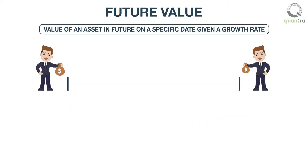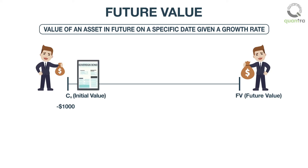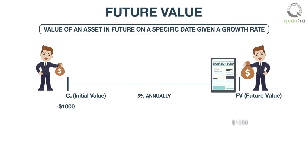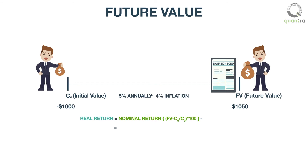Future value is the value of an asset in the future on a specific date, given a growth rate. For example, if you invest $1,000 in a riskless sovereign bond which gives you a return of 5% annually, then after one year your $1,000 would be $1,050. Here $1,050 is the future value of the bond after a year. If we adjust the bond's annual nominal return of $50 with an inflation of $40, we will get the annual real return of $10 on our invested amount of $1,000.